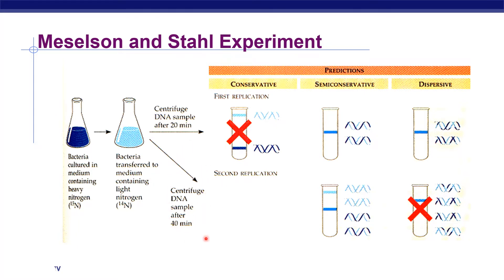They underwent centrifugation to distinguish based on their densities. Stahl cultured E. coli in a medium containing ammonium chloride over many generations, so that N15 heavy nitrogen was integrated into the bacterial DNA. Later they switched the ammonium chloride medium to normal ammonium chloride using N14. At regular intervals they took samples and checked the density of the DNA. After 20 minutes, the sample had bacterial DNA with an intermediate density, and after 40 minutes the sample contained DNA with both intermediate and light density in equal proportion.